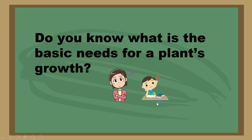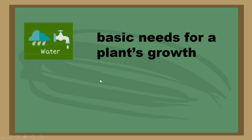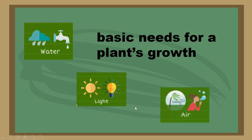You have the answer — water, sunlight, suitable temperature? What is your answer? The basic needs for a plant to grow: we need water, light, or sunlight.